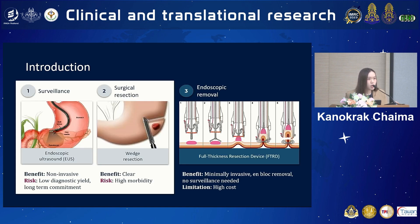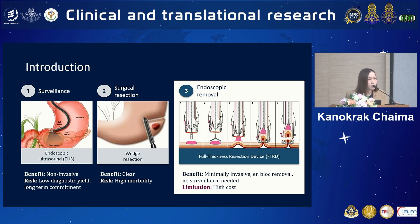To elaborate: for surveillance using endoscopic ultrasound, the problem is that it is not always accessible and affordable and requires long-term commitment from the patient. For surgical resection via wedge resection, it is invasive with high risk of adverse effects. Now we have the endoscopic removal option as an answer. The novel endoscopic technique to treat small gastric sub-epithelial lesions, particularly small gastric GIST, is called full thickness resection device, or FTRD. FTRD can negate the need for long-term surveillance and can remove the tissue in the same procedure. It is minimally invasive compared to surgery, but the problem is that it is costly, which is why we would like to determine whether this device is worth it for lesions incidentally found during endoscopy.